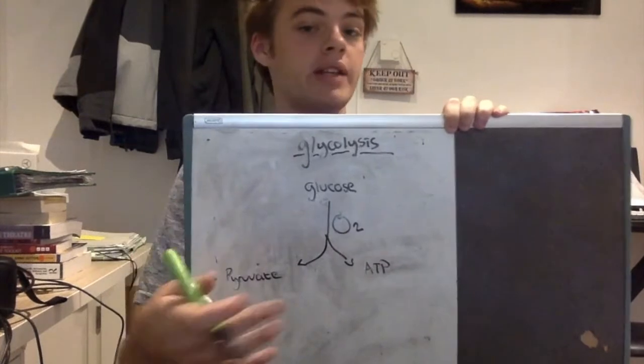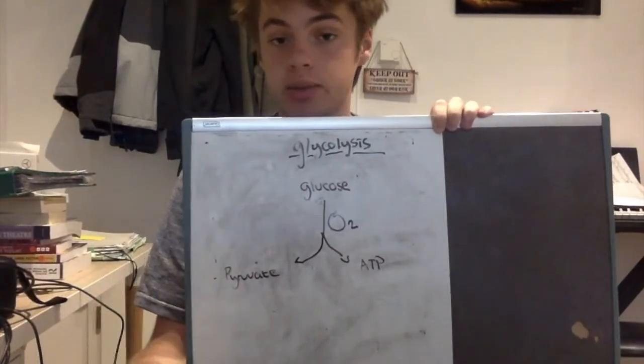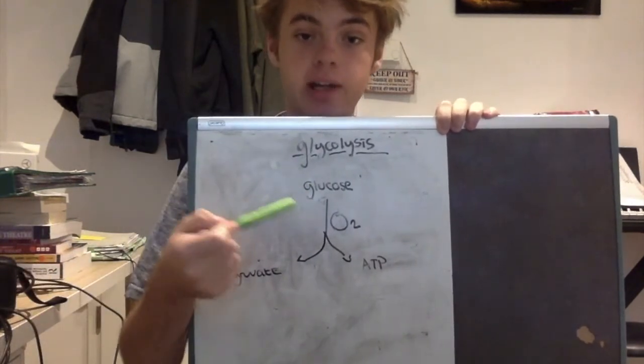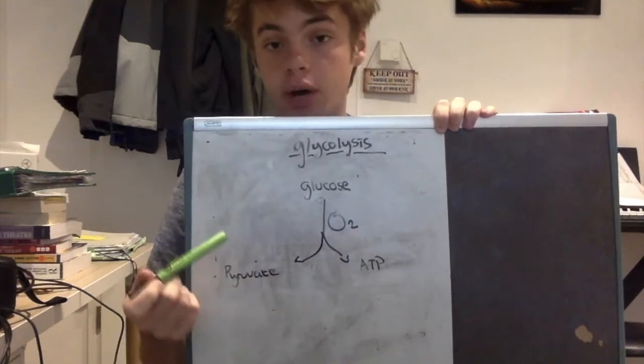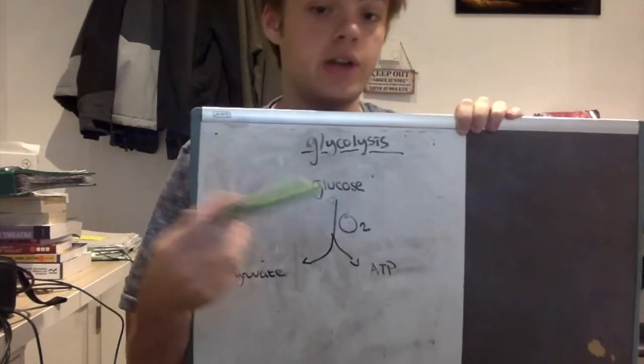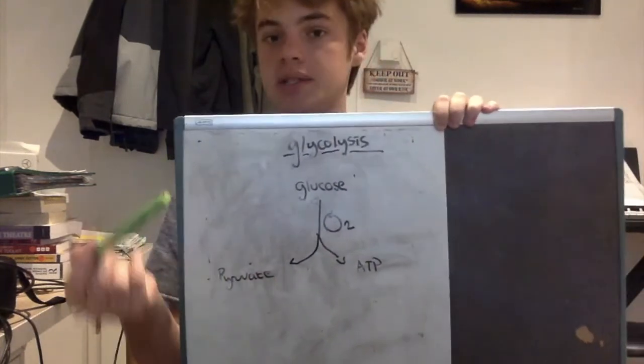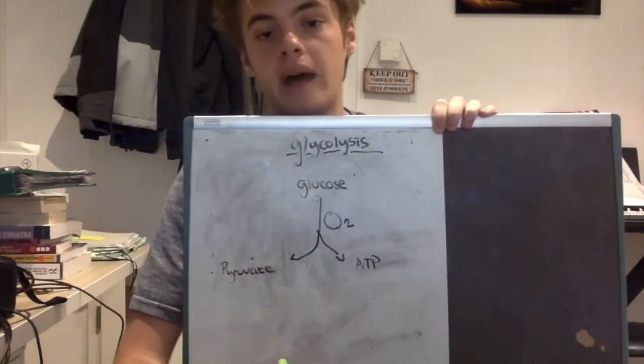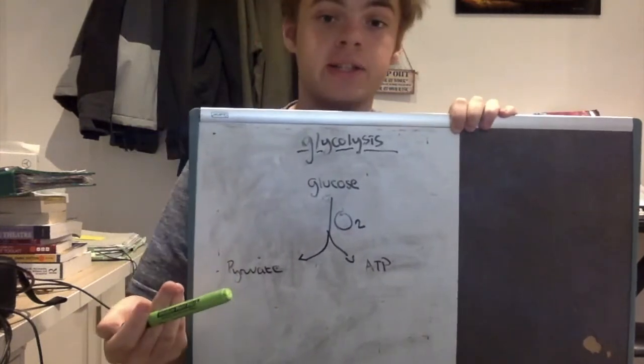A quick bit of biology: when we talk about baking bread, we're talking about ethanol fermentation — the production of ethanol or alcohol. To understand how it works, we need to talk about glycolysis, which literally means to break down sugars. Glucose is broken down into ATP and two 3-carbon molecules called pyruvate. This requires oxygen to be present — the same system our body uses for aerobic respiration, with a little extra going into the citric acid cycle.